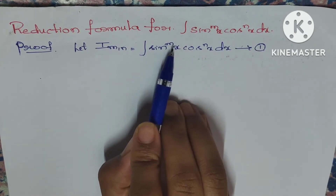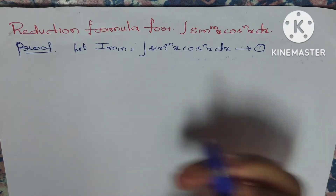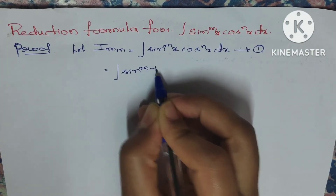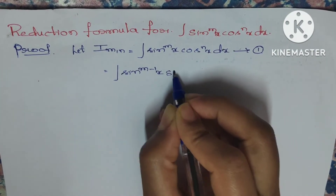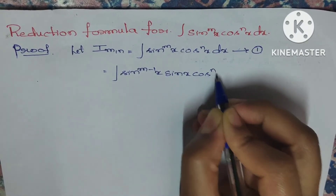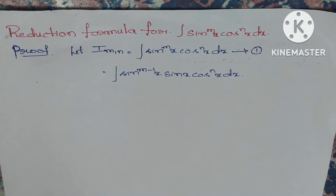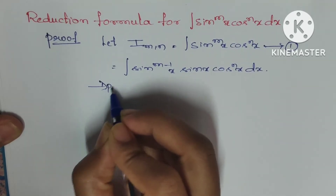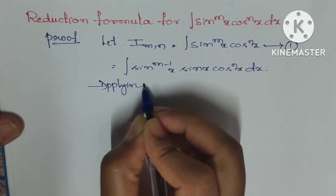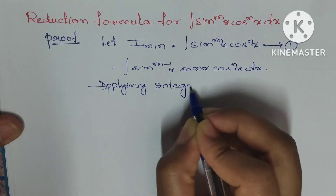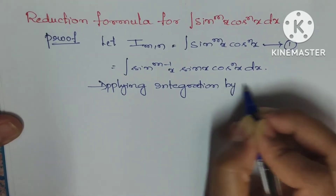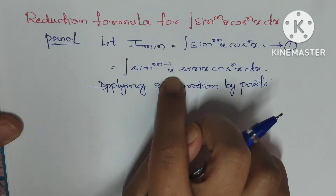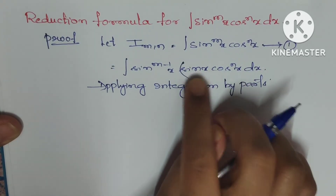In the next step, I'll break the exponent m into two parts: (m-1) and 1. So this equals integration of sin^(m-1)(x) · sin(x) · cos^n(x) dx. Now we will apply integration by parts.